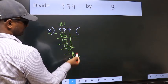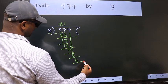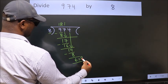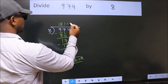No more numbers to bring down. So we stop here. This is our remainder. This is our quotient.